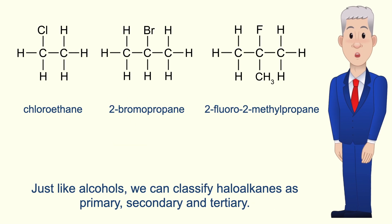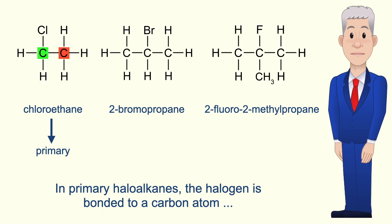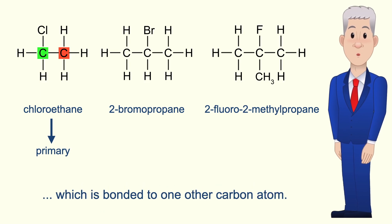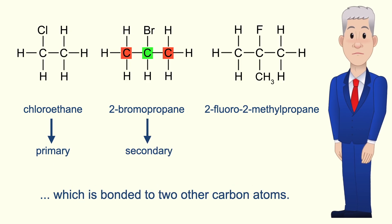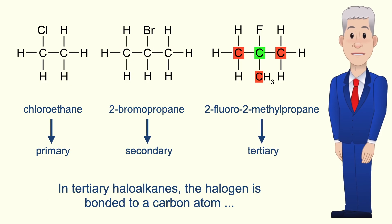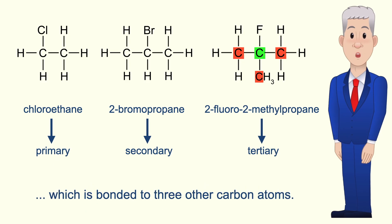Just like alcohols, we can classify haloalkanes as primary, secondary, and tertiary. In primary haloalkanes, the halogen is bonded to a carbon atom which is bonded to one other carbon atom. In secondary haloalkanes, the halogen is bonded to a carbon bonded to two other carbon atoms. In tertiary haloalkanes, the halogen is bonded to a carbon bonded to three other carbon atoms.